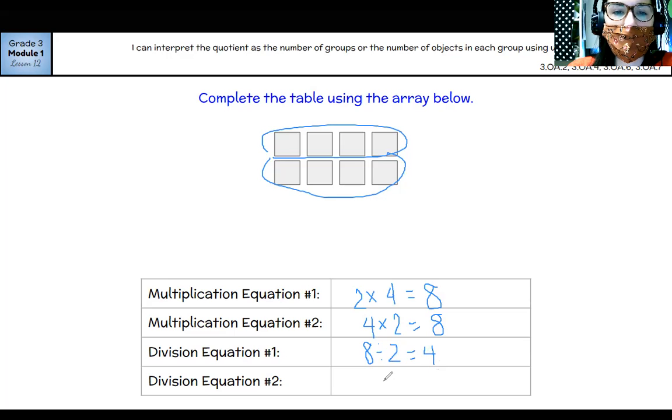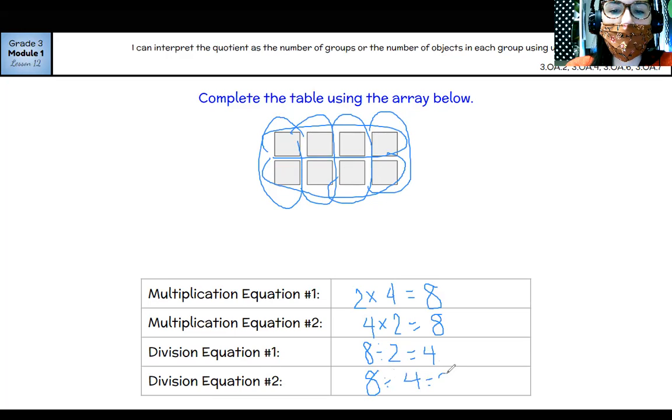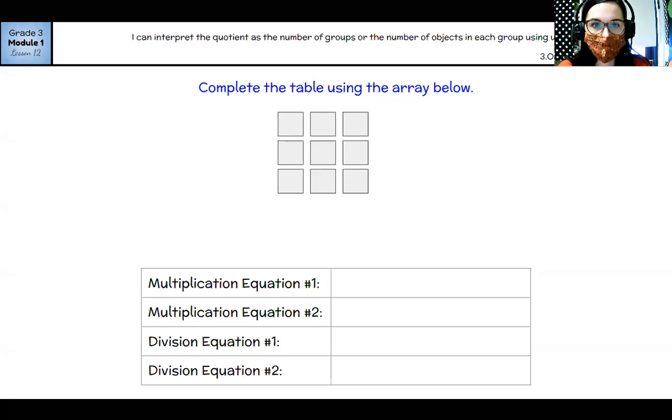If I wanted to do it by columns, I would say eight divided by four equals two in each. Okay, let's try the same thing with this array.